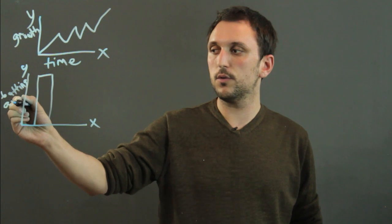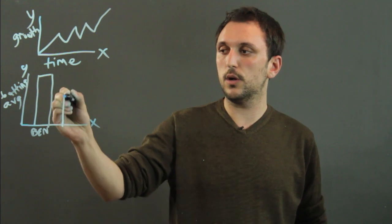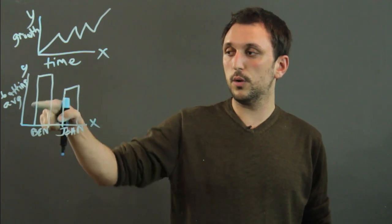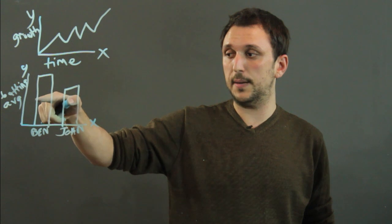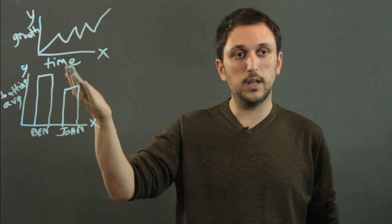So we have batting average and you have Ben, and then you also have a bar for John. So it looks like John had a lower batting average than Ben. Bar graphs are good when you are dealing with infinite data.